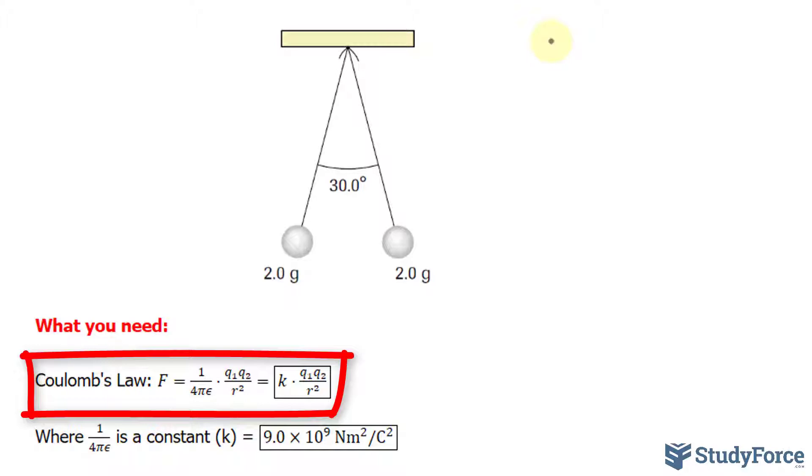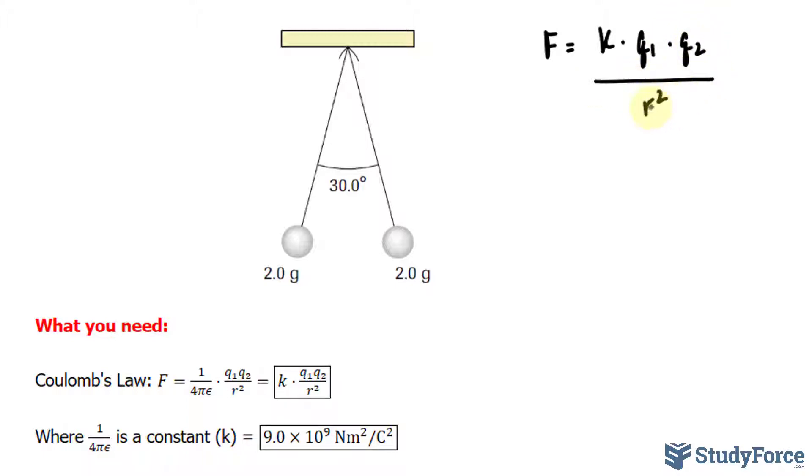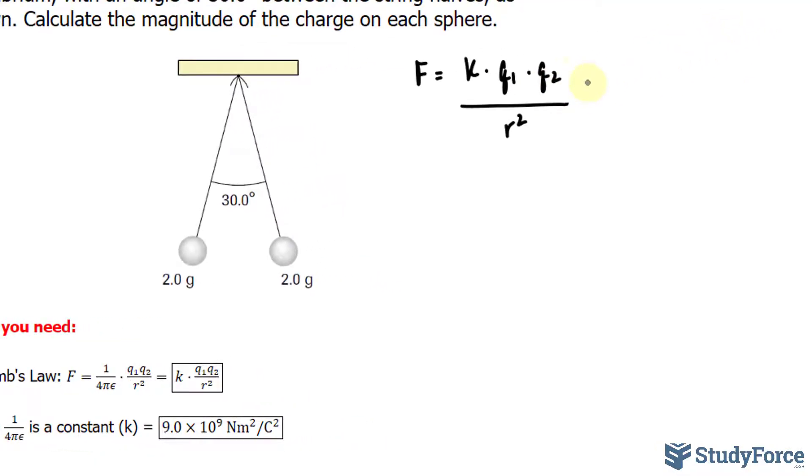Coulomb's law looks like this. We have F equals a constant k, which is given, times q₁ times q₂ over r², where r represents the distance between these two spheres. Since both spheres are identical, q₁ and q₂ can simply be denoted as q. And it is q that we are looking for.